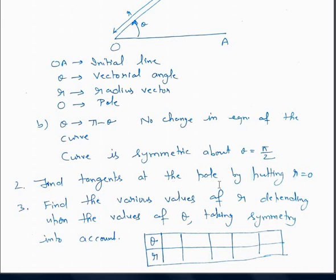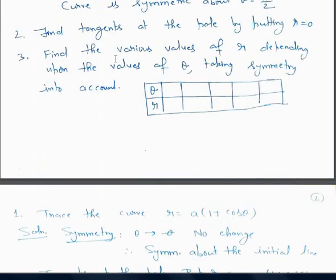The second step is to find tangents at the pole. At the pole, R equals 0. So we put R equal to 0 and the resulting values of theta give the tangents at the pole. The third and last step is to form a table of values of theta and the corresponding values of R. We then take all those points, join them, and by symmetry we can draw the full curve.